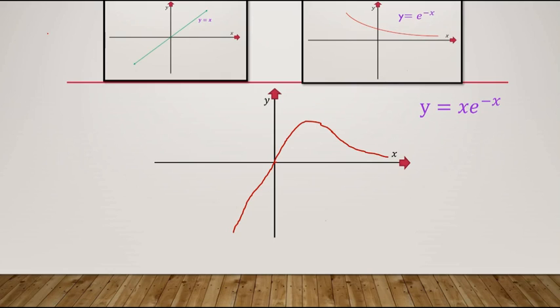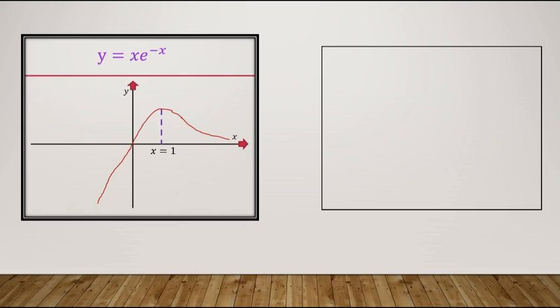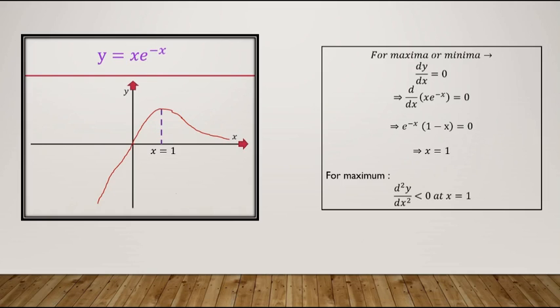Then they said, let's find its maximum point. For maximum or minimum value, we should take dy/dx equal to 0 - the first derivative of this function with respect to x should be 0. After little calculation, I got x equal to 1. For checking whether it is maximum or minimum, we take the double derivative with respect to x. If it is negative at x equal to 1, then y is maximum at x equal to 1. They said, that's okay, we may move on to the next question.